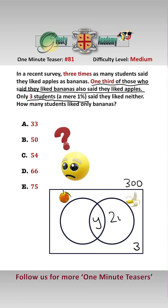So we can split this as y and 2y, and let's call this x. So we know that x plus y, which is the number who liked apples, equals three times the number who liked bananas. And we also know that x plus y, plus 2y, plus three, equals 300, from the Venn diagram.